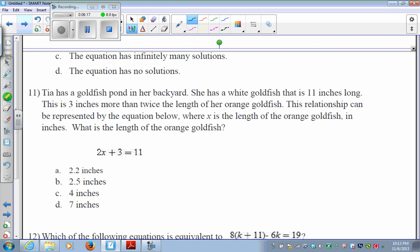Number 11. So Tia has a goldfish in her pond. She has a white goldfish that is 11 inches long. This is 3 inches more than twice the length of her goldfish. This relationship can be represented by the equation below. So 3 more than twice the length of her goldfish, which is 11. What is the length of the goldfish that we need to solve? So 2x plus 3 is equal to 11.